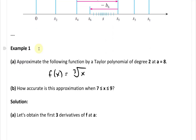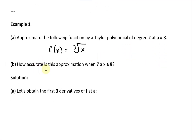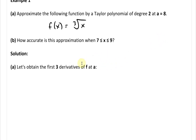Let's look at Example 1, which involves the cube root of x. We need to approximate the following function by a Taylor polynomial of degree 2 at a equals 8. Then part B asks how accurate this approximation is when x is between 7 and 9. So we're going to be approximating at a equals 8.